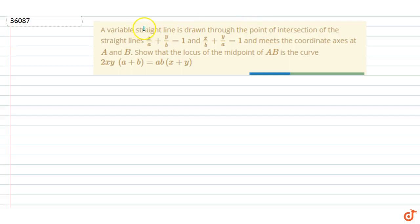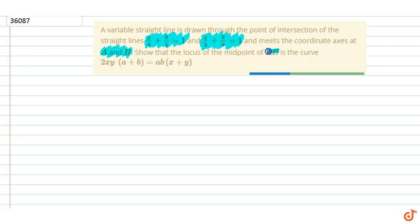The question given is: a variable straight line is drawn through the point of intersection of the straight lines x/a + y/b = 1 and x/b + y/a = 1, and meets the coordinate axes at A and B. Show that the locus of the midpoint of AB is the curve 2xy(a + b) = ab(x + y).